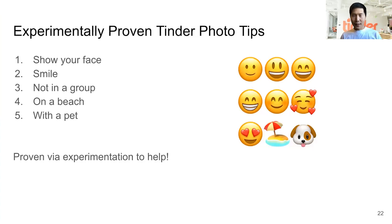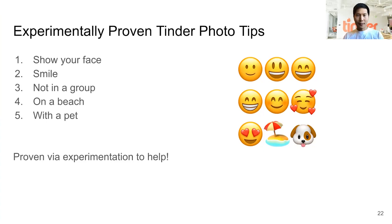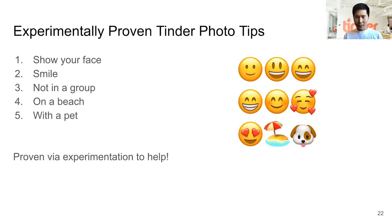For some practical advice from Tinder: here are photo tips that have been experimentally proven. First and foremost, show your face and smile. It helps if you're not in a group so people know who you are. Instead of a selfie in front of a mirror, take a picture on a beach where it's more natural. And if you have a pet like a dog, it's always very popular. All of these tips have been proven via experimentation to help.